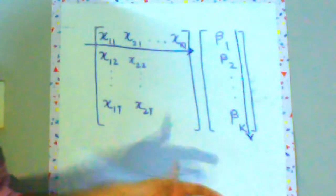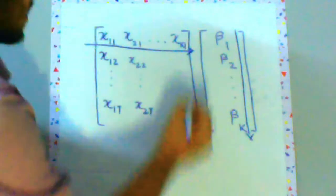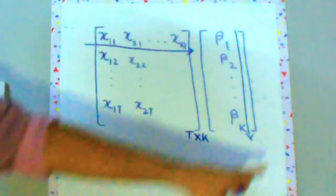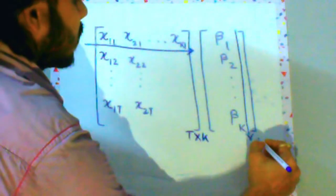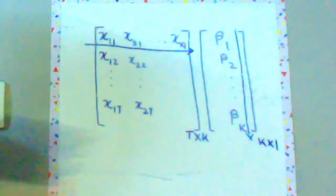If you look at the dimension of this matrix this is t cross k and the dimension for this is k cross 1 and as this k over here is the same k over here you can multiply these two matrices